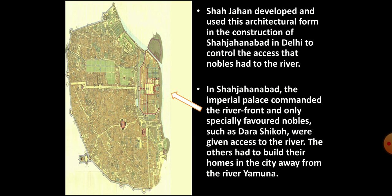This architectural form developed by Shah Jahan was used by him while constructing the city of Shah Jahanabad in Delhi. He used this architectural form so that he could control the nobles' access to the river. The king's palace commanded the riverfront. Only those nobles whom the king favored, such as his eldest son Dara Shukoh, had access to the river. The other nobles had to build their residences in Shah Jahanabad, away from the river Yamuna.